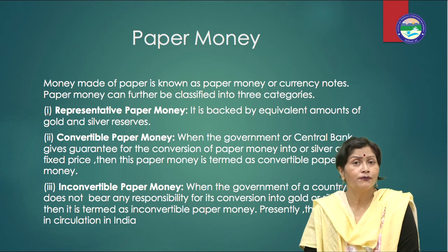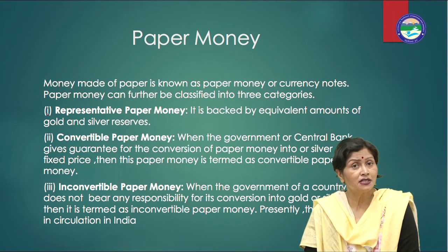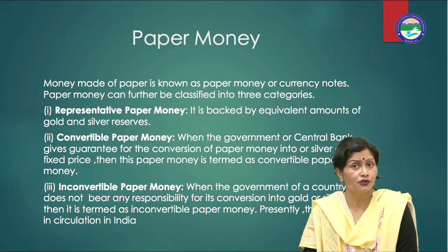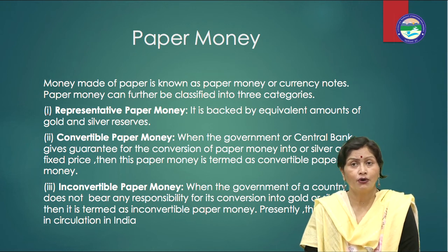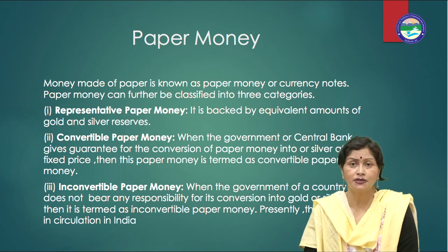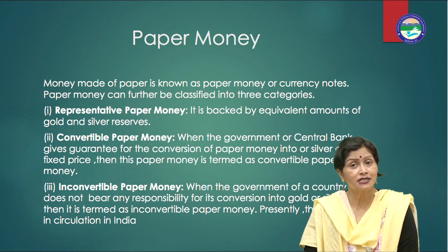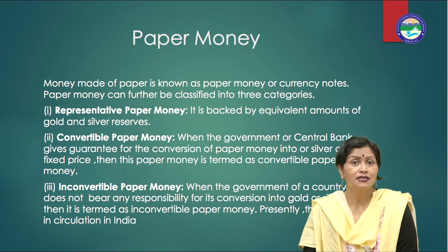Money made up of paper is known as paper money, or currency notes. Paper money can further be classified into three categories. Number one, representative paper money — it is backed by an equivalent amount of gold and silver reserves. Number two, convertible paper money — when the government or central bank gives the guarantee for the conversion of paper money into gold or silver at a fixed price. Number three, inconvertible paper money — when the government does not bear any responsibility for its conversion into gold or silver. Presently, this money is in circulation in India.